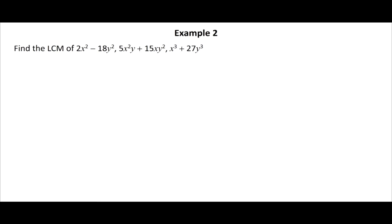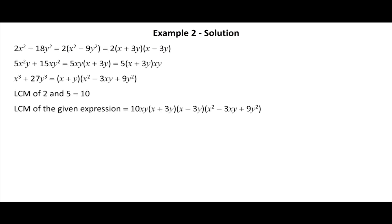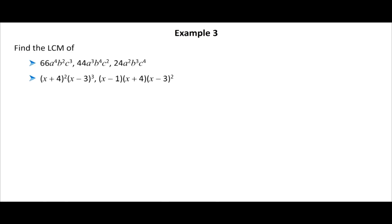Here is an example of finding LCM: find the LCM of (2x squared minus 18y squared), (5x squared·y plus 15x·y squared), and (x cubed plus 27y cubed). Click the solution button to view the solution. Also, find the LCM of the given expressions in the next two examples and click the respective solution buttons to view the solutions.